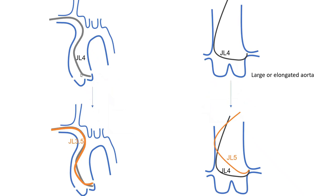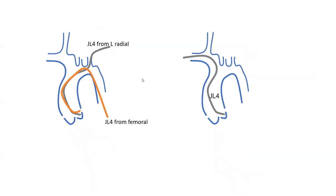To illustrate: with a Jutkins left 4 that's elongated, you get a Jutkins left 3.5 and you're properly engaged. This is Jutkins left 4, whether femoral or radial, in an older patient with severe hypertension and an elongated or large aorta — the whole catheter is falling down and the tip is pointing up, so you get a JL5. Or if this was JL3, you get a JL4. You get a bigger arm catheter. This is a very important slide to remember for all fellows.